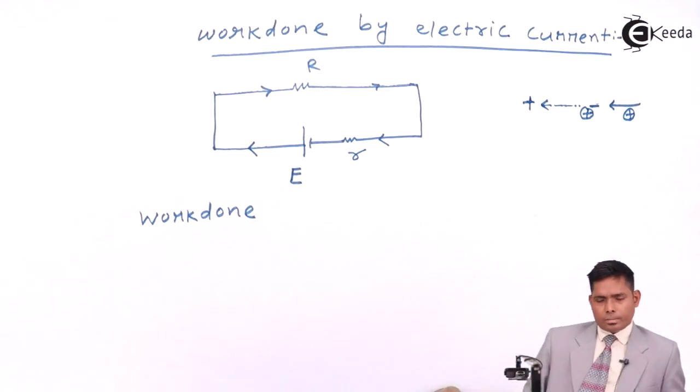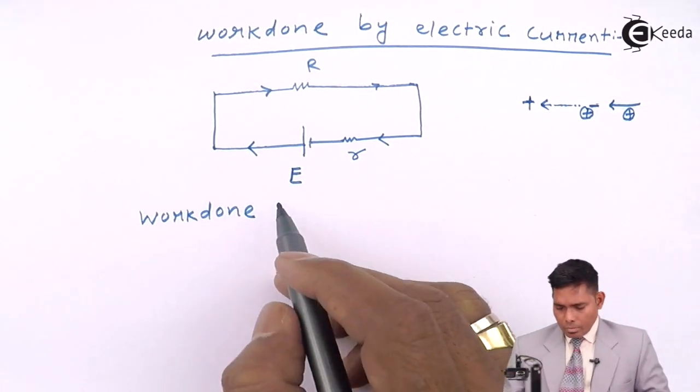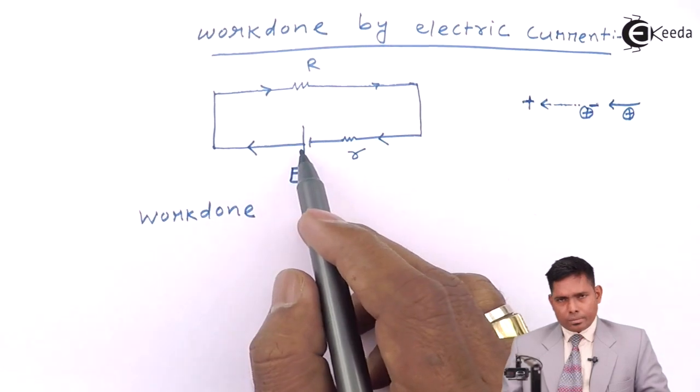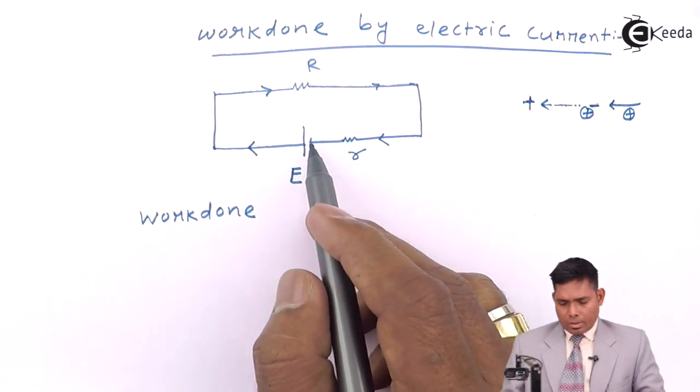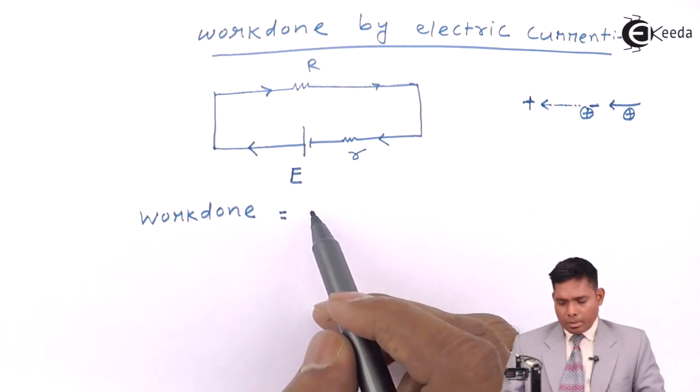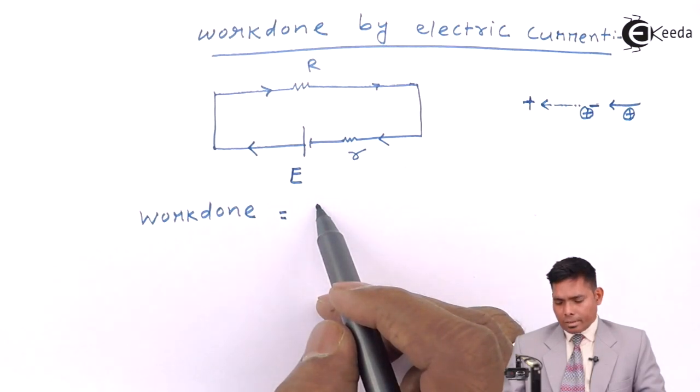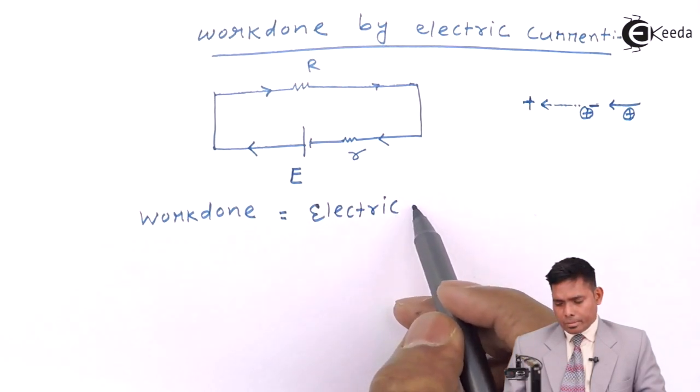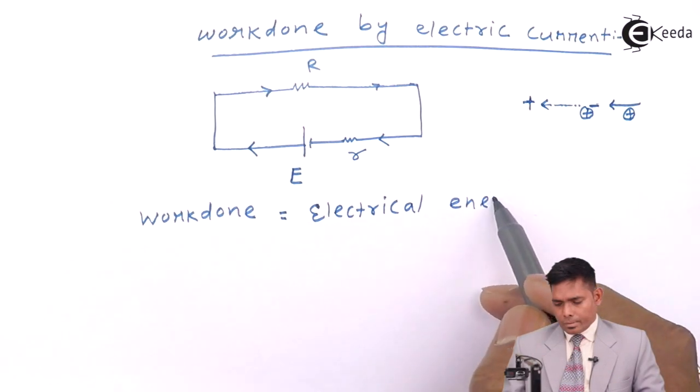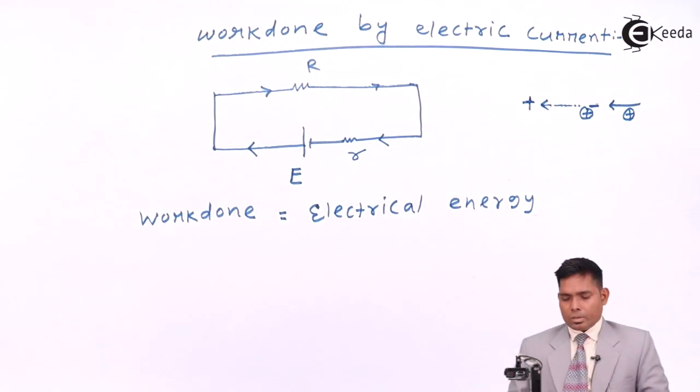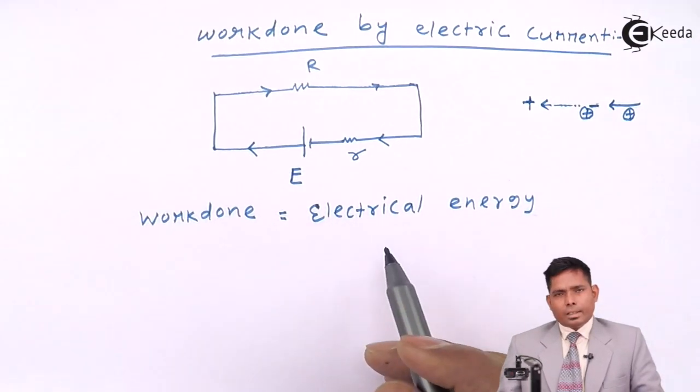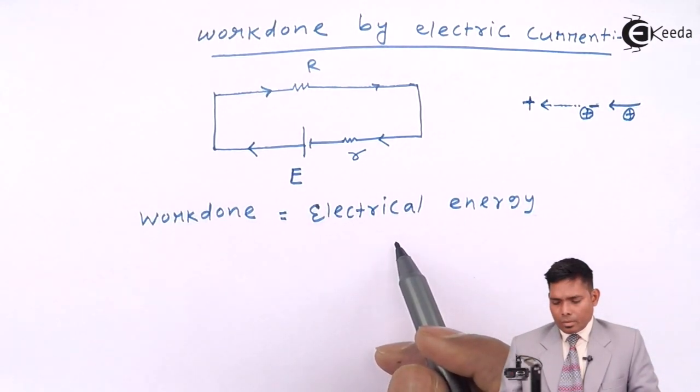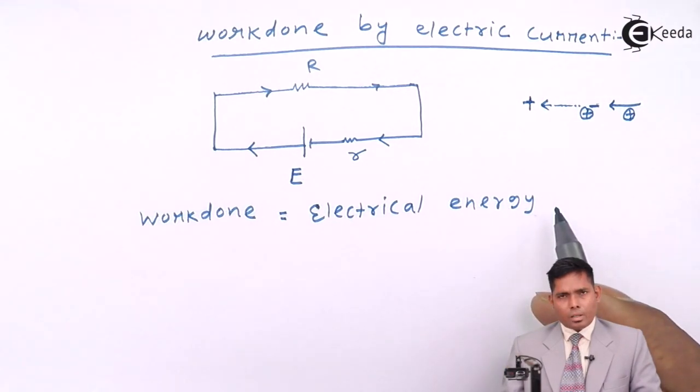That work done by the cell is nothing but the electrical energy. That work done is called as electrical energy. This electrical energy and power are also related.